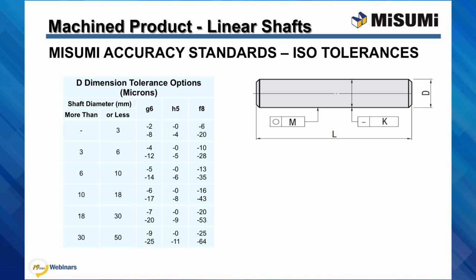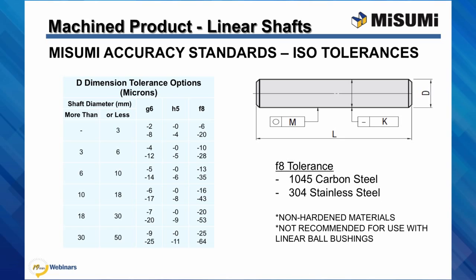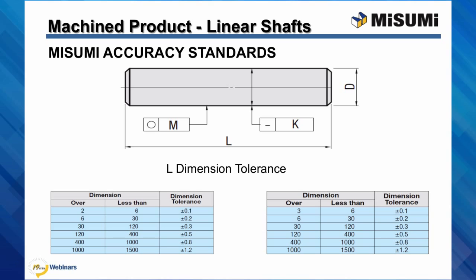Misumi uses GIS standards to control the dimensional tolerance of our linear shafts. The tolerance classes offered are G6, H5, and F8 as seen on the table. This is a snapshot of the GIS shaft fit tolerance table that can be found in the technical data section of our catalogue. Please note that the shafts are not recommended for use with linear ball bushings. The next tolerance specification is the length tolerance, which is not as critical as the shaft ends are normally mounted. The length tolerance can range from 0.1 to 1.2 millimeters depending on the length of the shaft ordered.